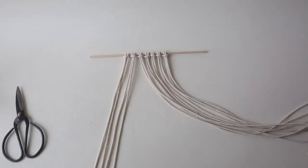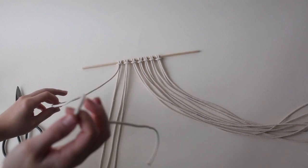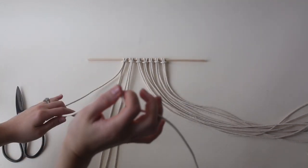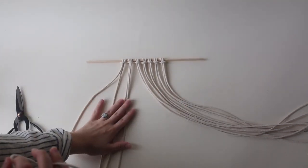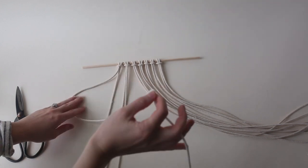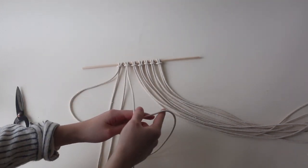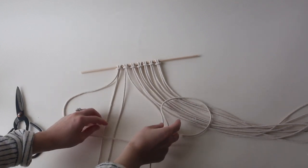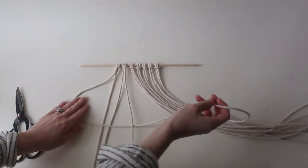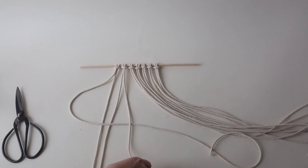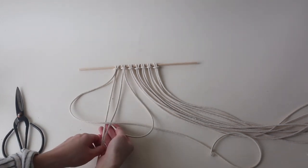Once your macrame setup is prepped, we're gonna go ahead and start with the square knot. This is really simple. All you're gonna do is take your left cord. You'll need the two sets of macrame cord for this. You take your left cord, put it over the two in the center, under the fourth one, just like this so it's gonna look like a number four.